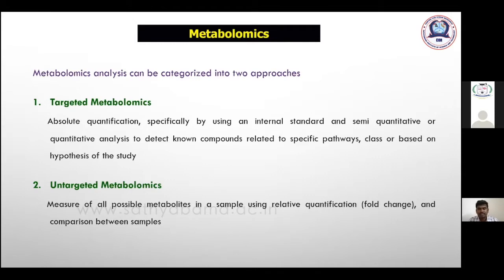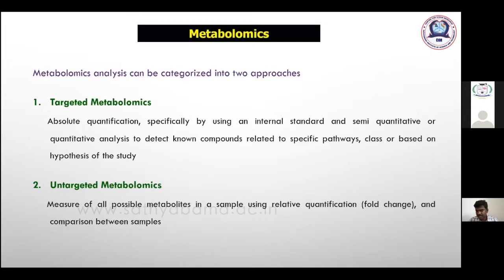For example, you take two samples — one from normal cells and another from cancer cells. You extract whatever metabolites are available in those samples, run the analysis, and confirm what differences exist between the samples and how much quantity is present. That comparison is untargeted metabolomics.